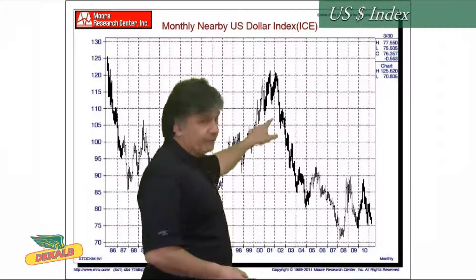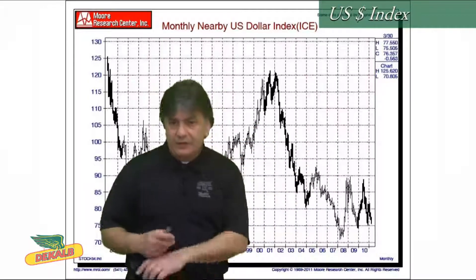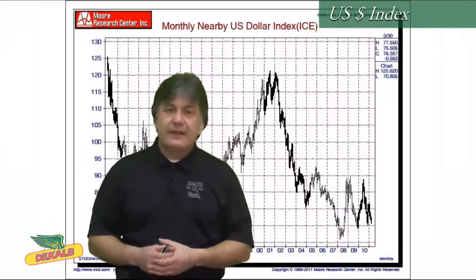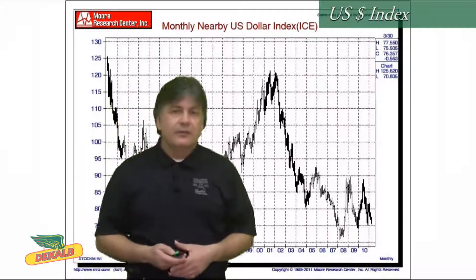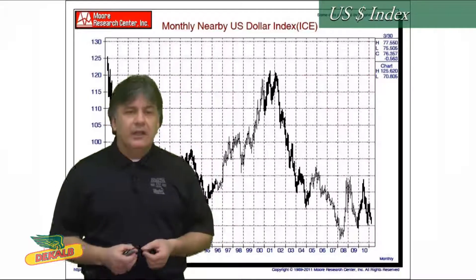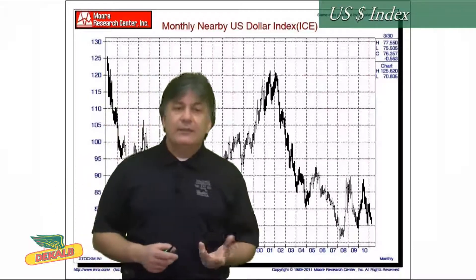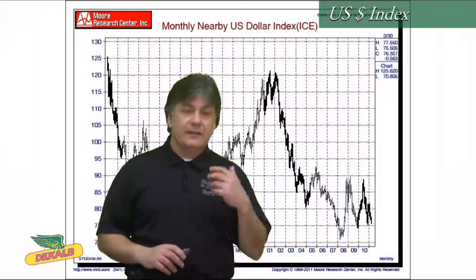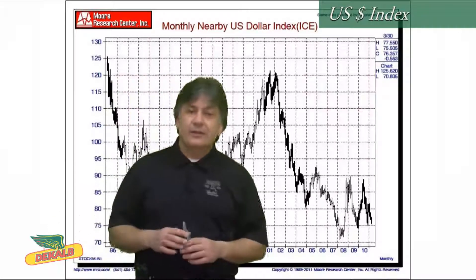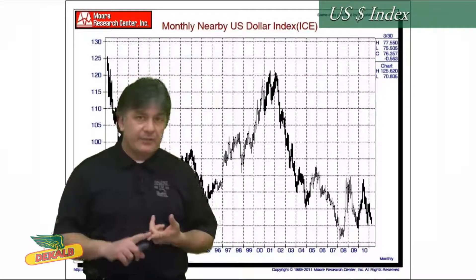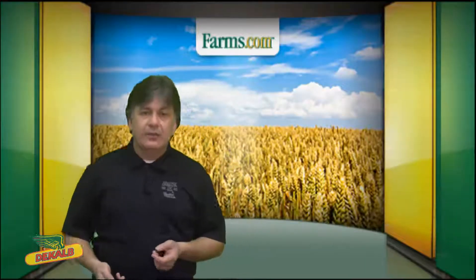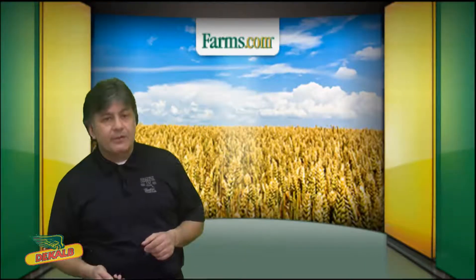Let's look more closely at the U.S. dollar index. This is a long-term chart of the U.S. dollar index. You can see over the last decade it's really been more or less falling versus all other currencies. It's the most widely recognized global currency index. It tracks the U.S. currency against six other major currencies, with the euro dollar being the biggest percentage at 56%, while the Canadian dollar weighting is only at 10%.